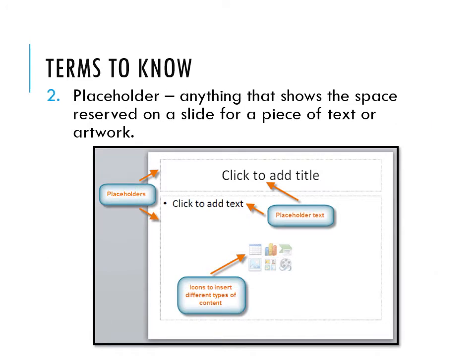Another term to be familiar with is placeholder. A placeholder is defined as anything that shows the space reserved on a slide for a piece of text or artwork. Looking at the image, there are two placeholder locations — one at the top and one at the bottom — with prompts like 'click to add a title' or 'click to add text.' These are text placeholders. You also have icons to insert different types of content such as a table, chart, smart art, or video into your presentation.